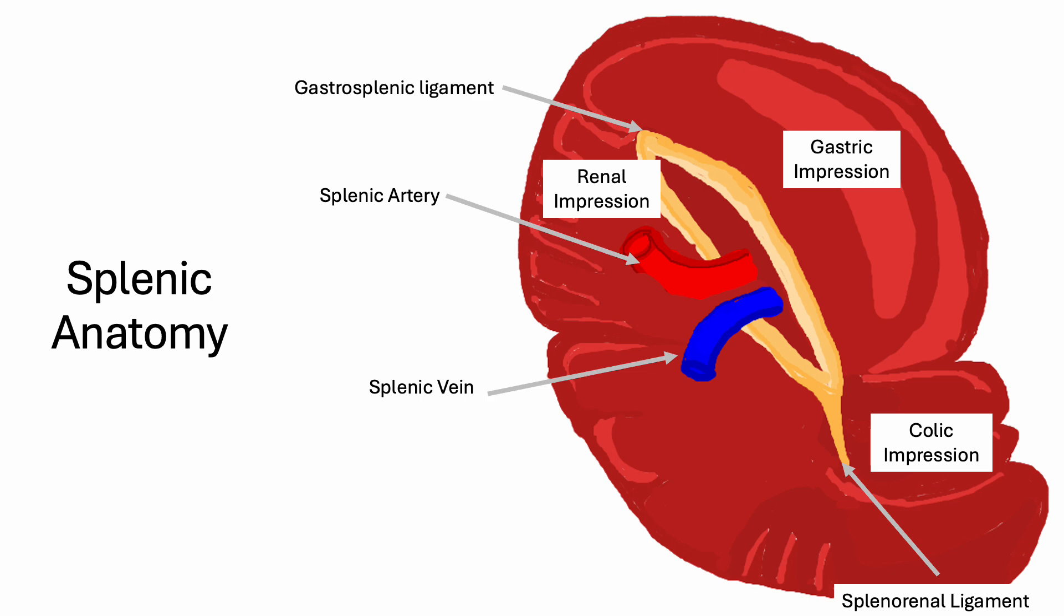The medial aspect is seen above. The spleen abuts the stomach, the colon, the pancreas, and the kidney. The gastrosplenic ligament and the splenorenal ligament hold it in place. It lives within the peritoneal cavity, covered in visceral peritoneum except at the hilum where the blood vessels enter.